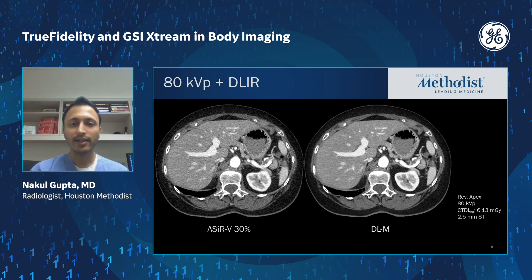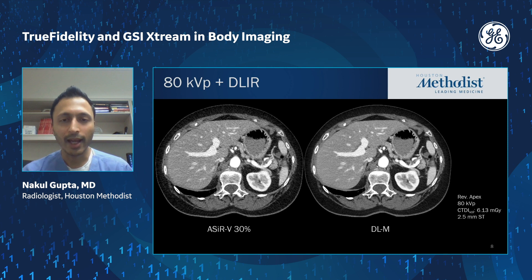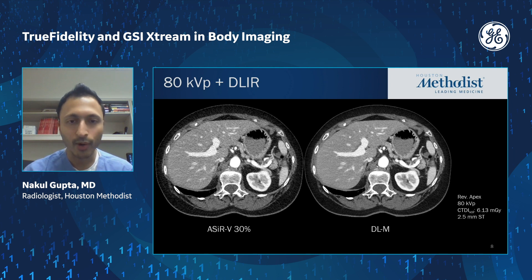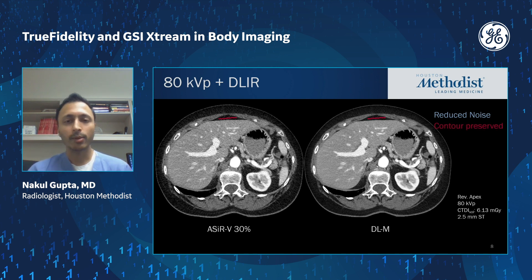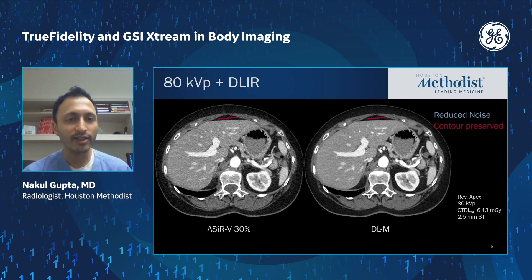Low KVP scanning is another area where deep learning recon really shines. Here's an example: an 80 KVP scan in an adult patient with a CTDI of six — a very reasonable dose level. ACER-V at 30% has moderate noise, whereas the deep learning medium-strength image has much lower noise while maintaining a very natural image texture and also maintaining contours. With high levels of iterative reconstruction, contours can become a little distorted, and smooth contours might start to look jagged. That's not the case with deep learning.